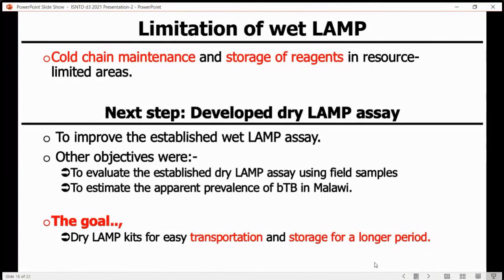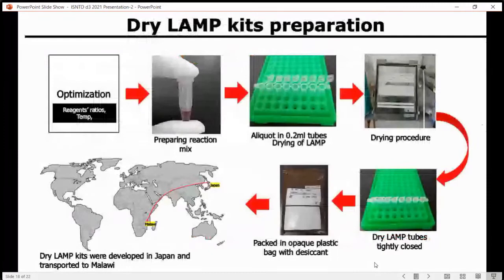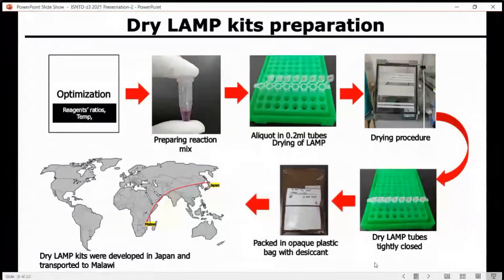So our next step was to develop a dry LAMP assay in order to improve the LAMP that we already developed. The objective was to evaluate it using crude samples and also to estimate the current prevalence of bovine tuberculosis in Malawi. We optimized the wet LAMP and carried out reaction testing, which was done in Japan, and later we transported the dry LAMP kits to Malawi.